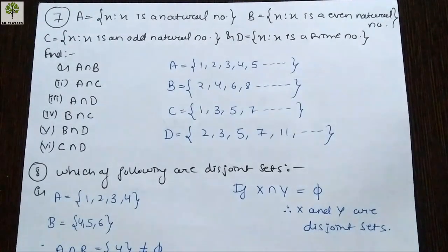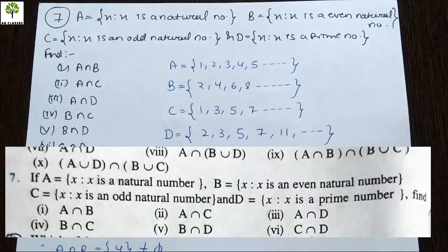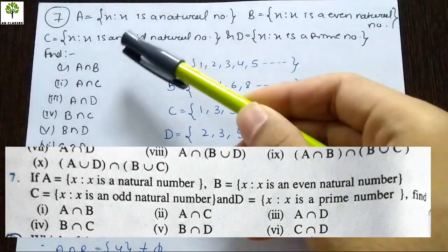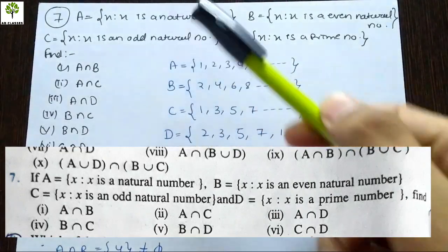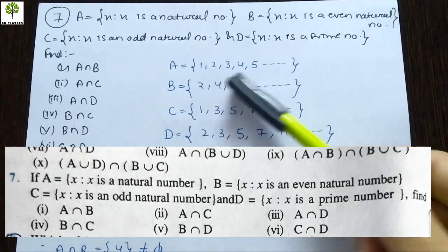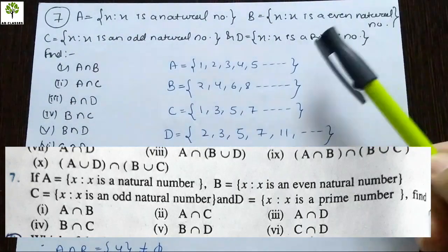In this video I am going to explain Exercise 1.4 of Class 11, Chapter 1 - Sets. First of all, question number 7, which I gave you in the last video. Question number 7: if A is a set written in set builder form, we have set builder form 2, 3, 4, 5 and so on.